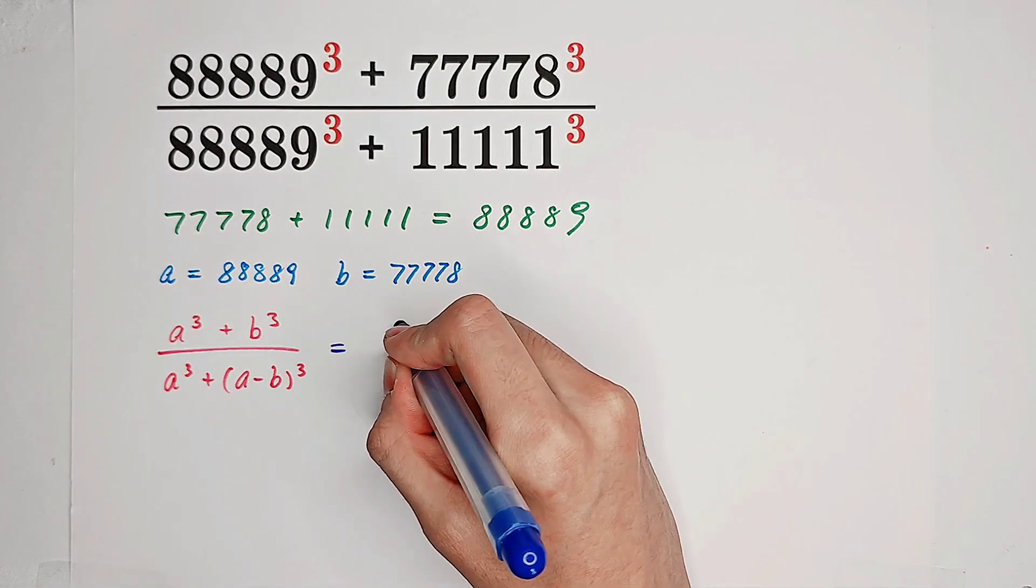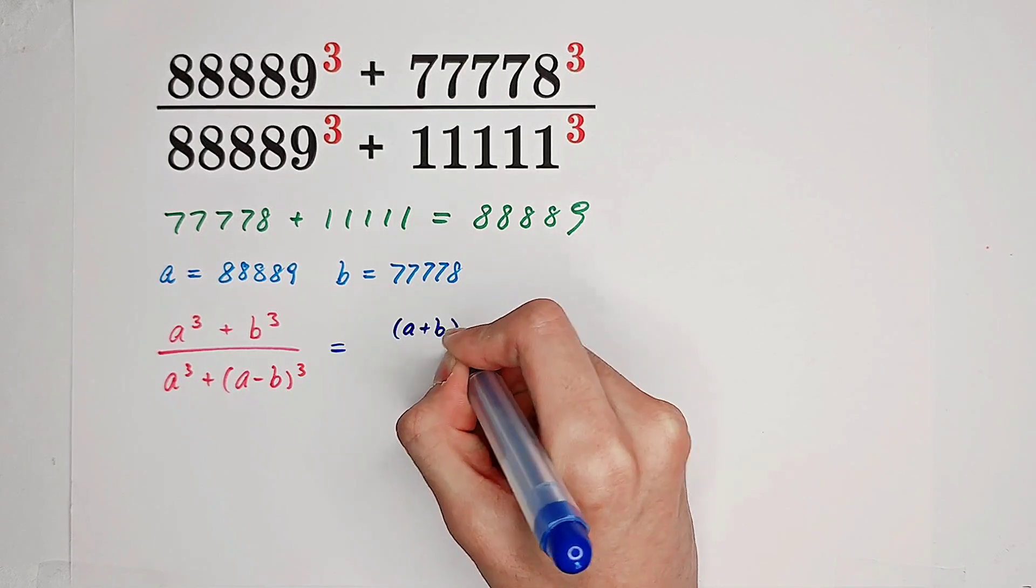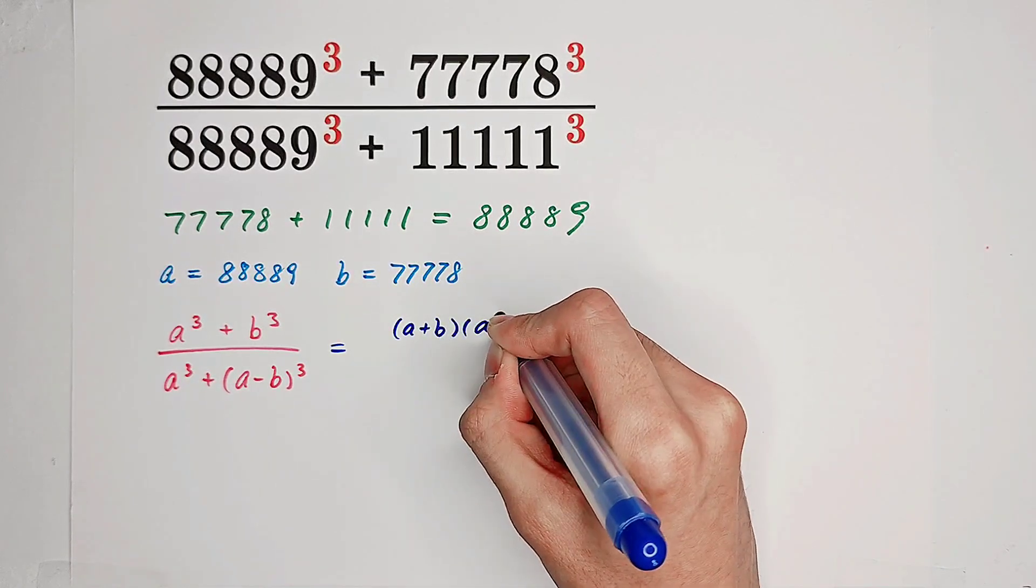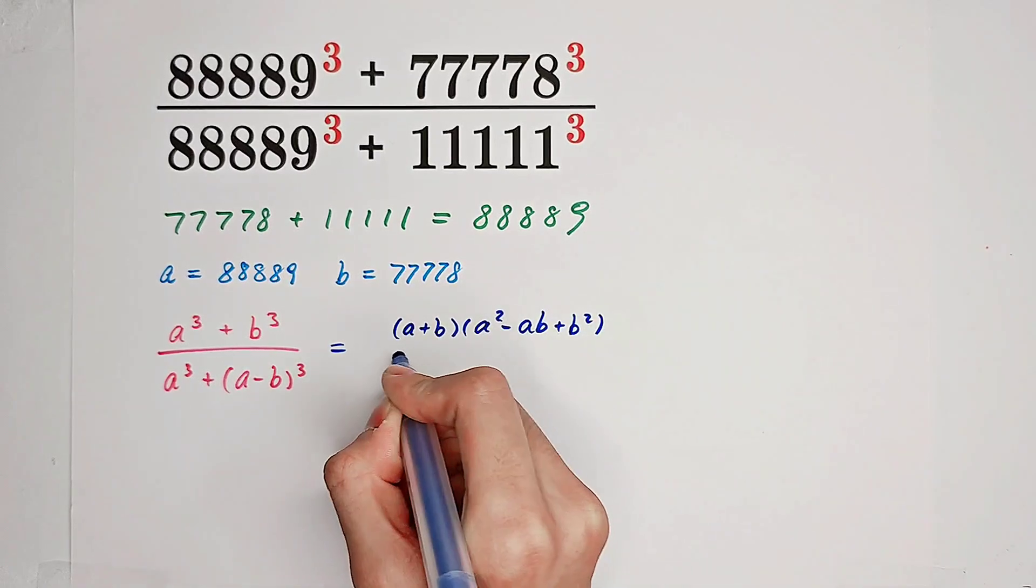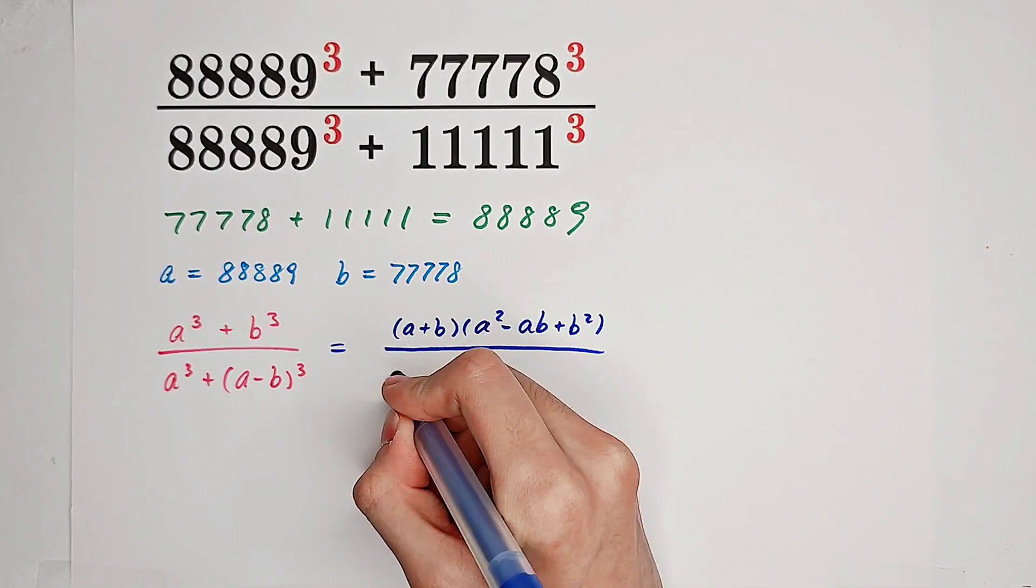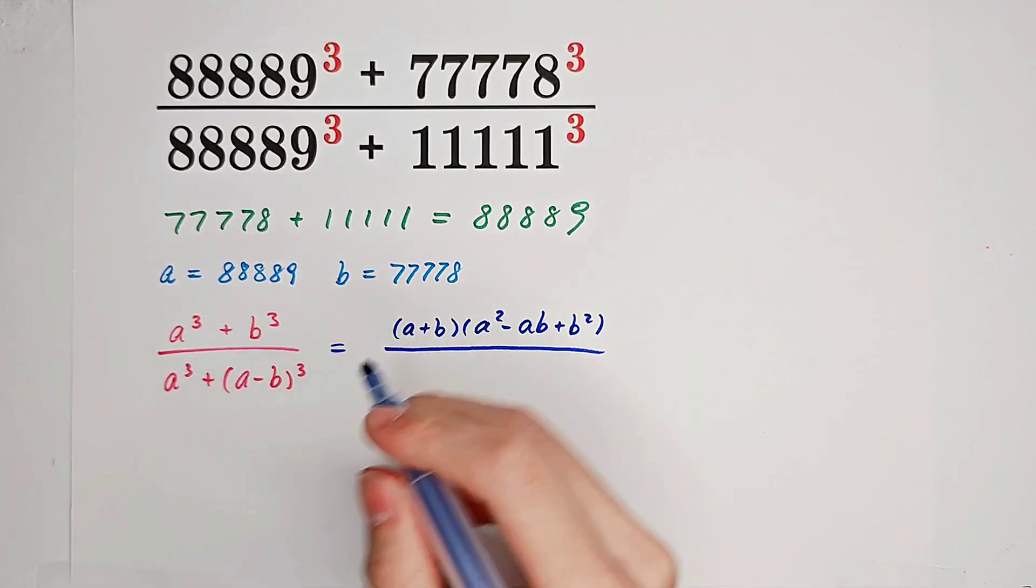A cubed plus B cubed is A plus B times A squared minus AB plus B squared over A cubed plus A minus B cubed.